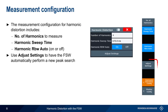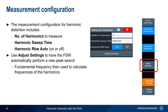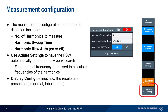Pressing the Adjust Settings button causes the FSW to automatically search for the peak — that is, the fundamental. The FSW will then use this frequency to calculate the frequencies of the harmonics. As with most FSW measurements, the Display Config button can be used to select how the measurement results are displayed — that is, in a trace, in a table, etc.